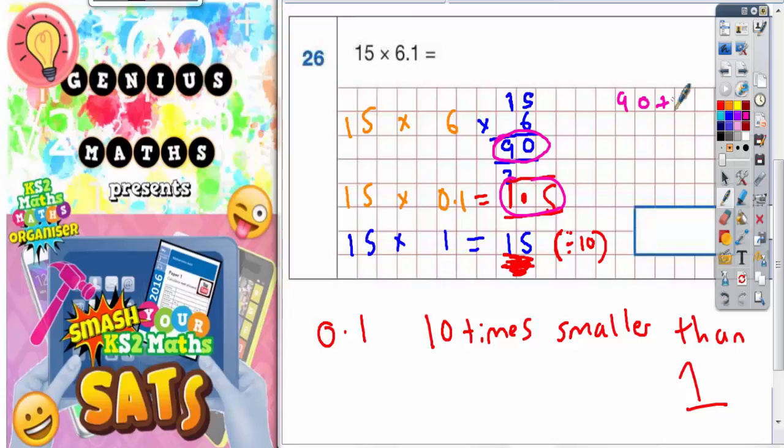Now you can do that in your head really, or you should be able to. 90 add the 1 is 91, and then add the 0.5, it's going to be 91.5. So your final answer is 91.5.